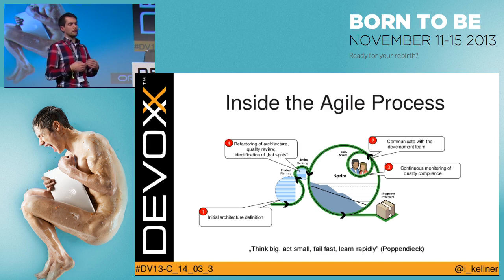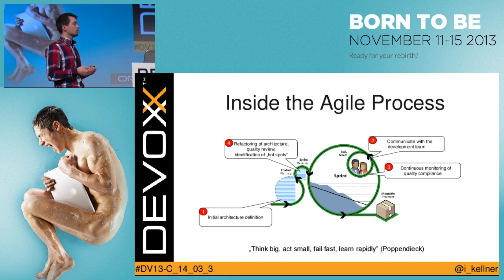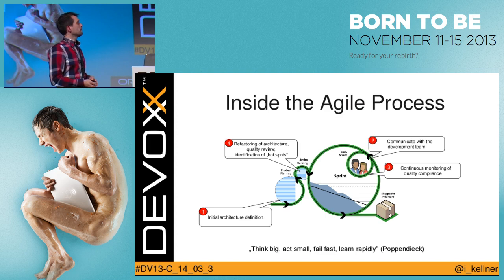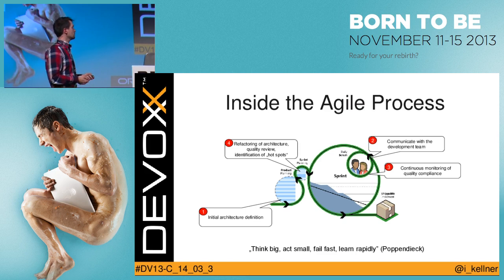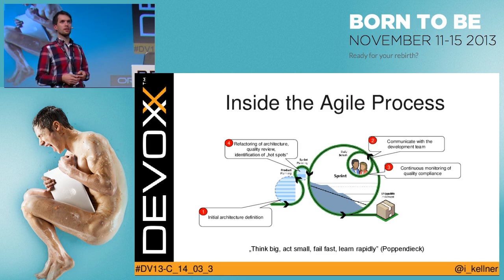In the next sprint planning, the architect is responsible for defining required refactorings, getting an overview of quality, identifying hotspots, and specifying the refactorings developers need to carry out. Think big, act small, and learn rapidly from mistakes — that's the whole idea behind the agile development process.